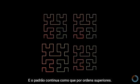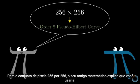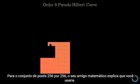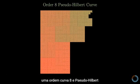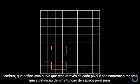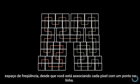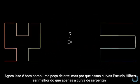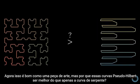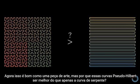And the pattern continues like that for higher orders. For the 256 by 256 pixel array, your mathematician friend explains, you would use an order eight pseudo-Hilbert curve. And remember, defining a curve which weaves through each pixel is basically the same as defining a function from pixel space to frequency space, since you're associating each pixel with a point on the line. Now, this is nice as a piece of art, but why would these pseudo-Hilbert curves be any better than just the snake curve?